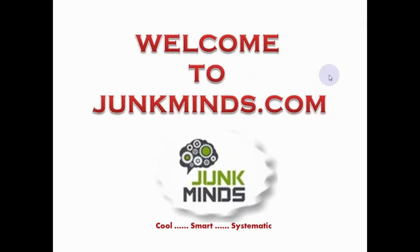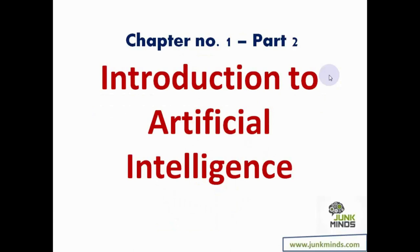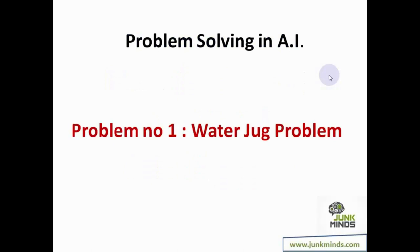Welcome back. Let's continue with chapter one, part two. In the previous part we introduced ourselves to the idea of artificial intelligence and defined something called state space. From this chapter they can ask us some simple numericals. The first one is the water jug problem — from an examination point of view, this is a pretty important question that has appeared in quite a few papers.